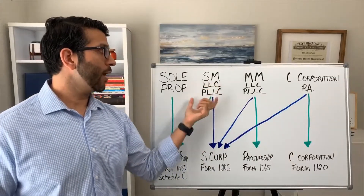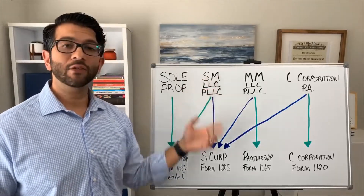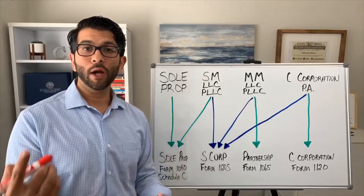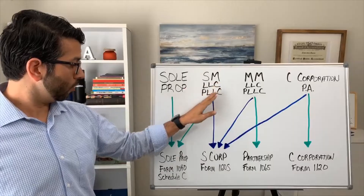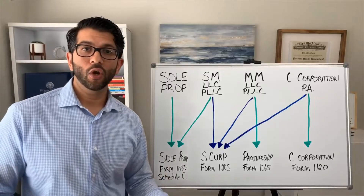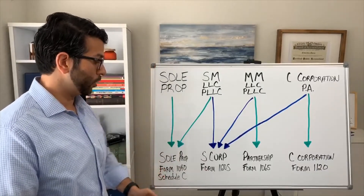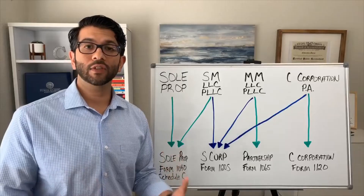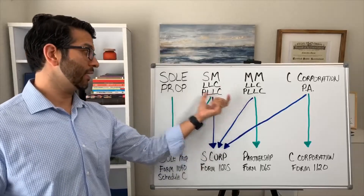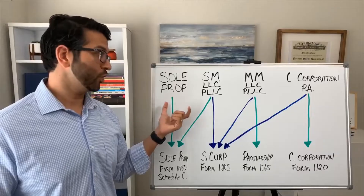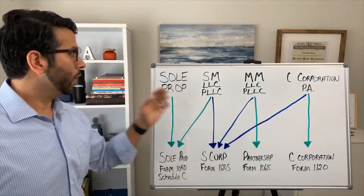Here I have SM LLC — single member LLC — meaning you're a one-person shop. How this is treated by default is as a sole proprietorship, exactly the same as that entity type. You are simply adding Schedule C to your individual tax return. A single member LLC by default is taxed the exact same way as a sole proprietorship — all it does is give you that limited liability protection.